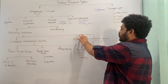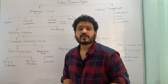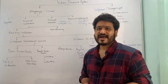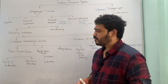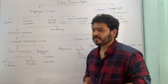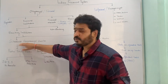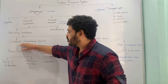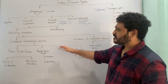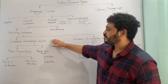Scheduled banks are those banks which are included in the second schedule of the Reserve Bank of India Act of 1934, and those which are not included in the second schedule are called non-scheduled banks. Today I will be talking only about scheduled banks, so they are two types: scheduled commercial banks and scheduled cooperative banks. Let us look at how scheduled commercial banks are further classified.